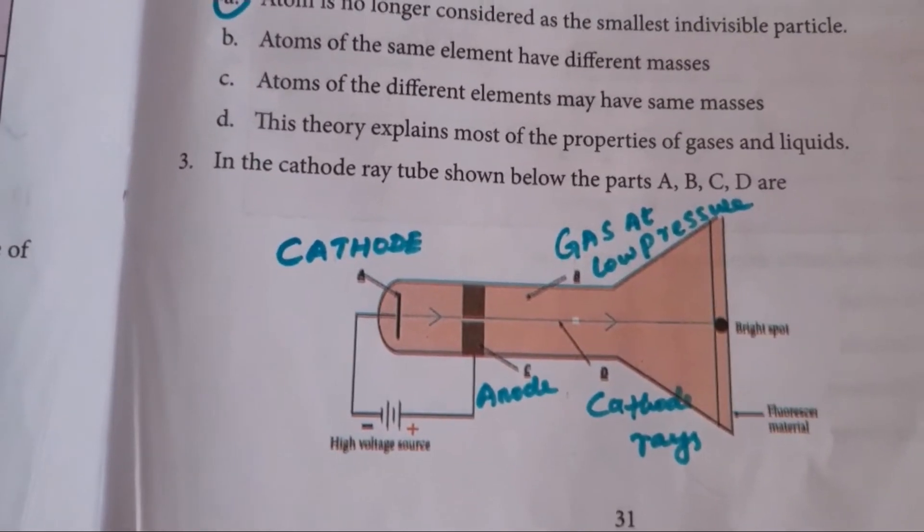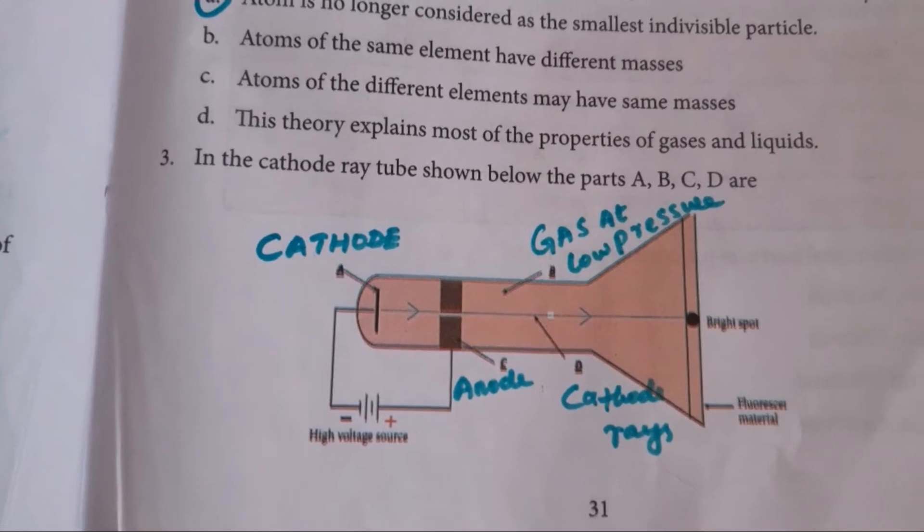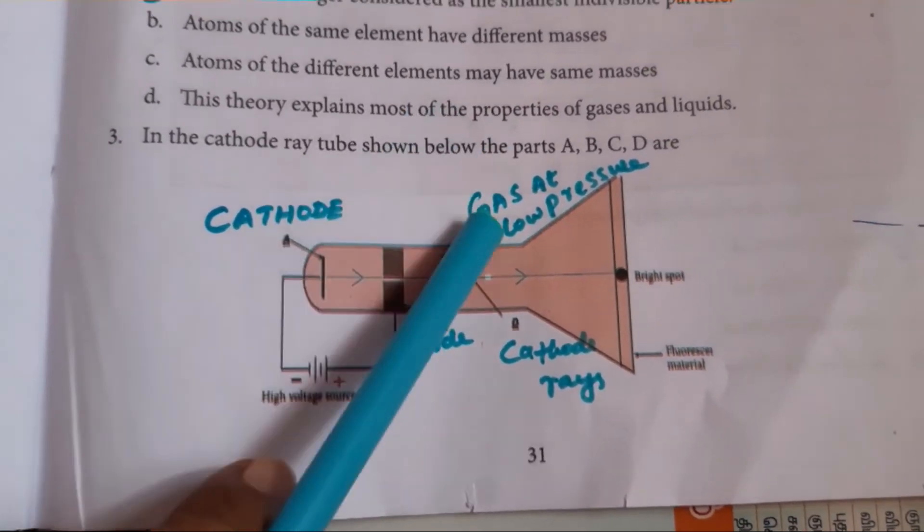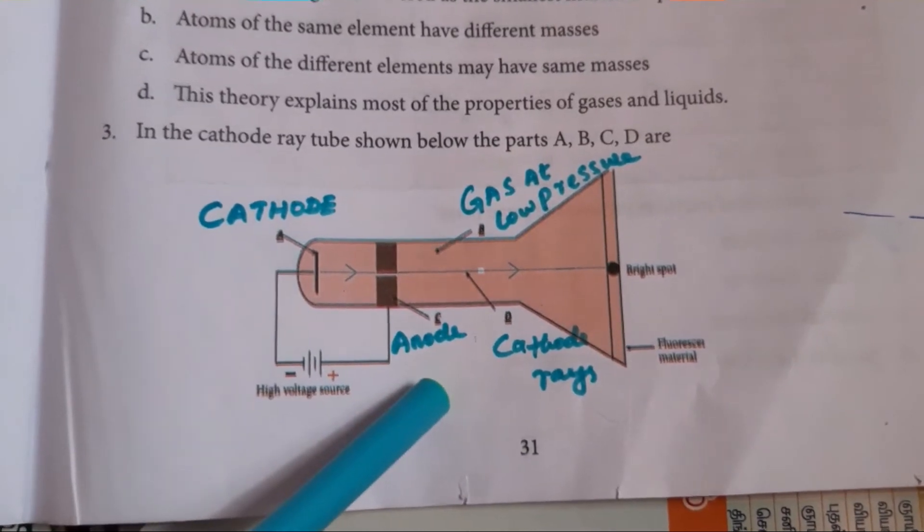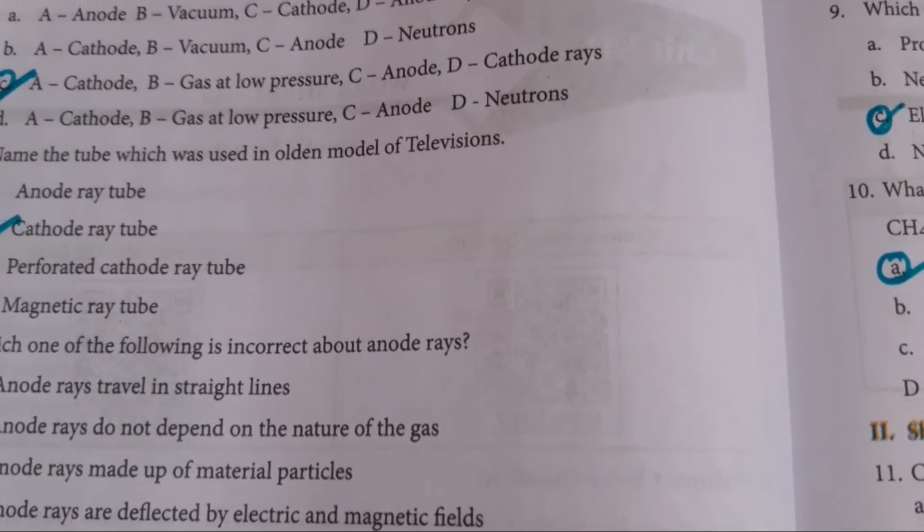Third one, in the cathode ray tube shown below, the paths A, B, C, D and R. For A, it is cathode and B, it is gas at low pressure and C, it is anode and D, it is cathode ray. So the answer is C.